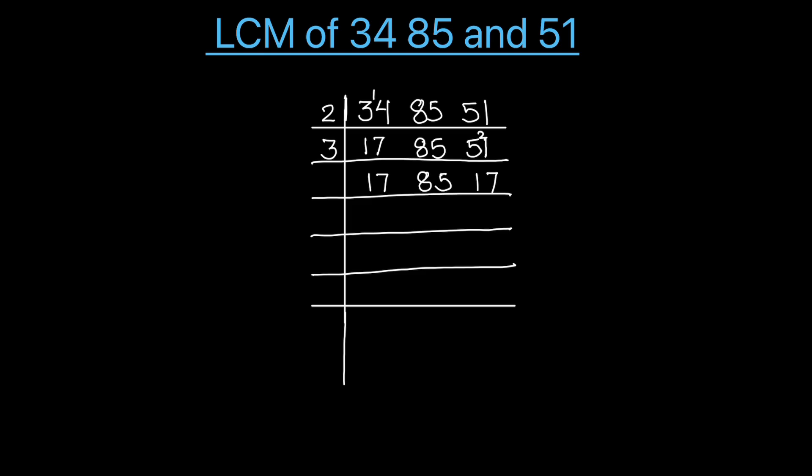So we'll use 5 to divide 85. 17 will be as is. 5 times 17 is 85. Now we have 17 as the only number, and it is a prime number which is only divisible by 17.